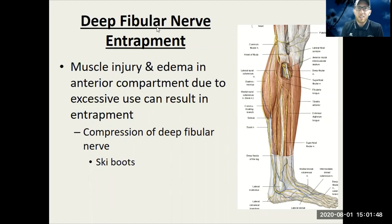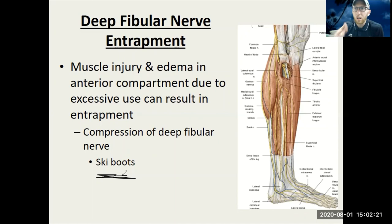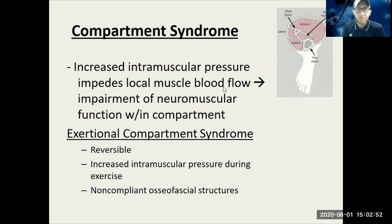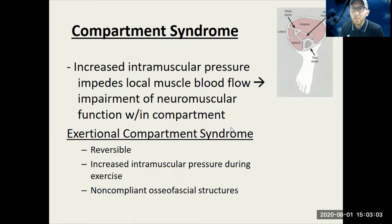Deep fibular nerve entrapment results in an inability to evert the foot, which can result in something called the ski boot walk, where someone walks without a lot of eversion or lateral movement. Bringing it all together: compartment syndrome — any one of the compartments can get too big and push out on the fascia causing really bad pain. If there's no room to expand it causes external compartment syndrome, pushing on the nerves and tendons until you need surgery to release those areas. This typically happens with strenuous exercise; catching it early can really help.